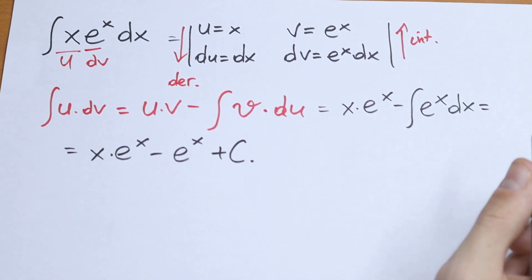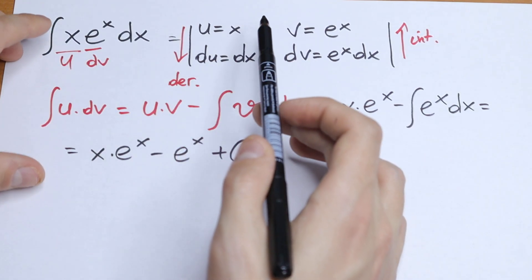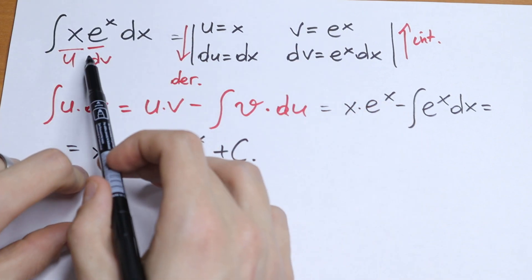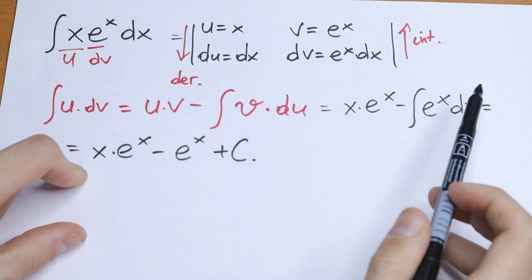So this is our integral. A really good case to use integration by parts: finding our u and finding our derivative, this will be our dv, and we need to find the integral and put all of this in our formula.